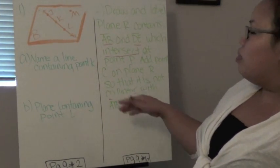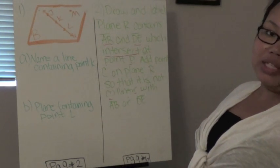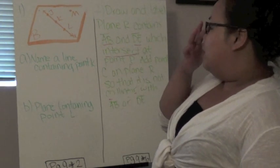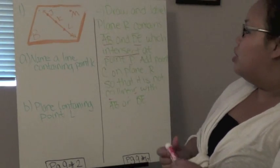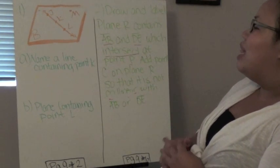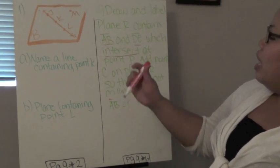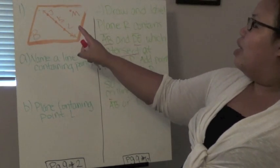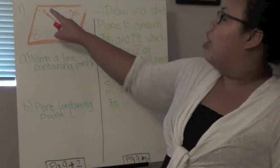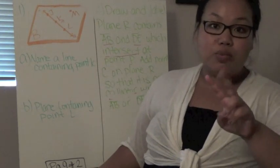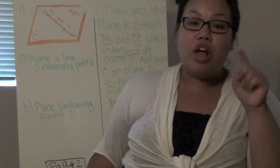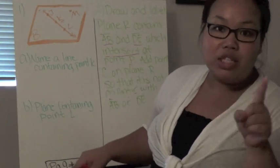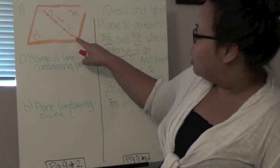So the first one, make sure to please remember to pause at any time in order to write everything. The first one, it gives us a picture right here in orange, and it wants us to name a line containing point K. Now we're locating point K, which is right here. Point K goes on this line right here. So there's two ways. What was the first way again? We have lowercase a.